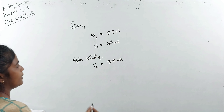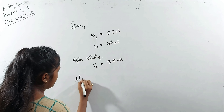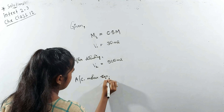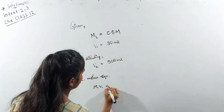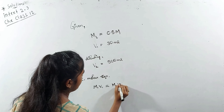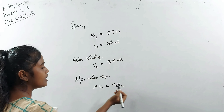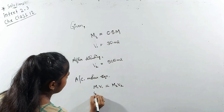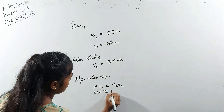So the new volume is now 500 mL, and we need to find its new molarity. Let's see what is given. Before dilution, the molarity is M₁ = 0.5 M H₂SO₄, and the volume before dilution is V₁ = 30 mL.